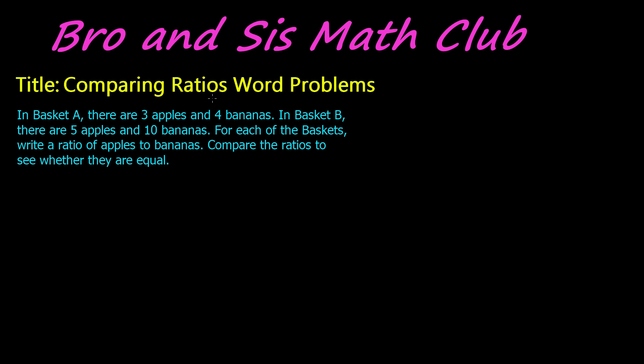From our previous videos, we know that ratios are just a comparison between two numbers, and ratios can be written in three different ways. Let's say we have the ratio 1 to 3. I can write this as 1 to 3, I can write this as 1 colon 3, or I can write this as a fraction, 1 over 3.